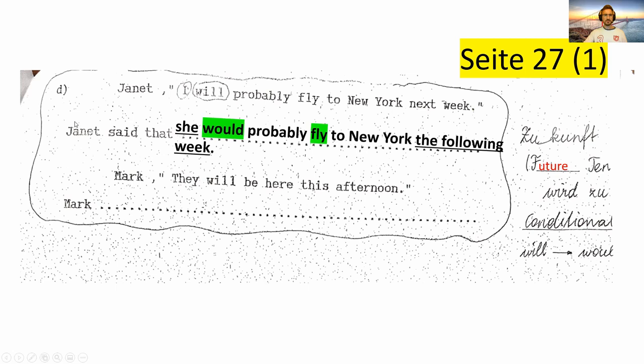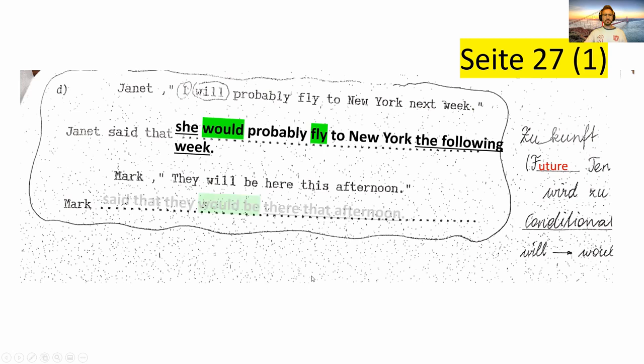Weil es könnte ja sein, dass eine Woche schon später ist, an dem wir das jemandem erzählen. Dann ist ja das nicht mehr 'next week' — das stimmt ja dann nicht mehr. Sondern es war die folgende Woche in diesem Gespräch. Marco said that they will — would — be there that afternoon.